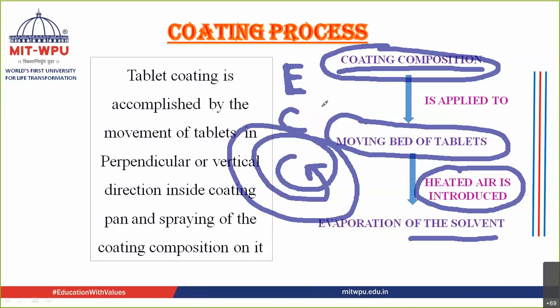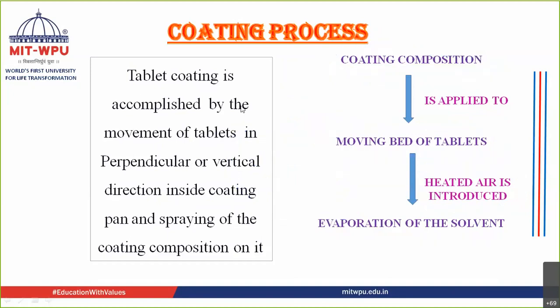This coating process is similar to painting a wall. In painting, you bring the paint — the polymers — and add a solvent system like water. The brush is replaced here by spray guns, which spray the coating material onto the tablet surface. The solvent evaporates and the coat remains on the tablet, just as paint remains on a wall. The coating process is accomplished by movement of tablets in a perpendicular or vertical direction inside the coating equipment.